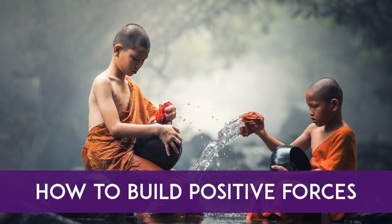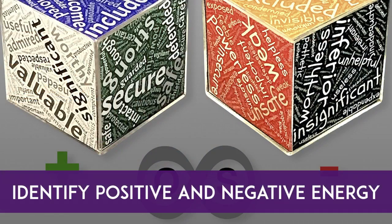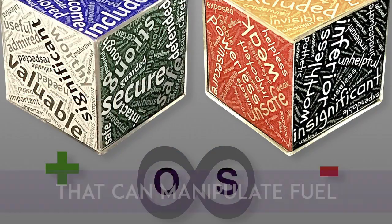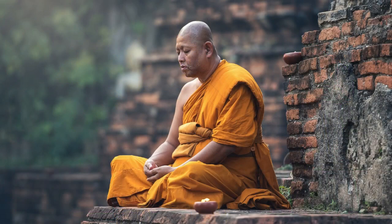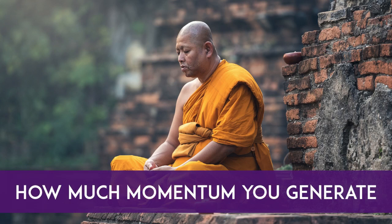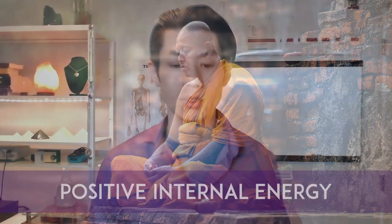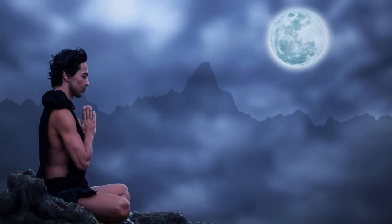How can you build positive forces faster and bigger than your negative forces? Because if you have two forces going against each other, unless one is consistently stronger, you're never going to move — and sometimes you move backwards if the negative is stronger. So let's identify what are some of those positive and negative energies that manipulate your life force and momentum.